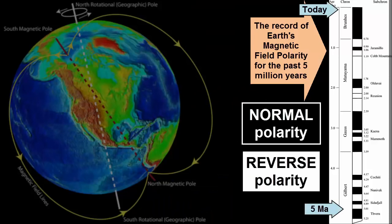This image shows the changes in Earth's magnetic field over the past five million years. Do you see a pattern? Can we predict a change? Maybe.